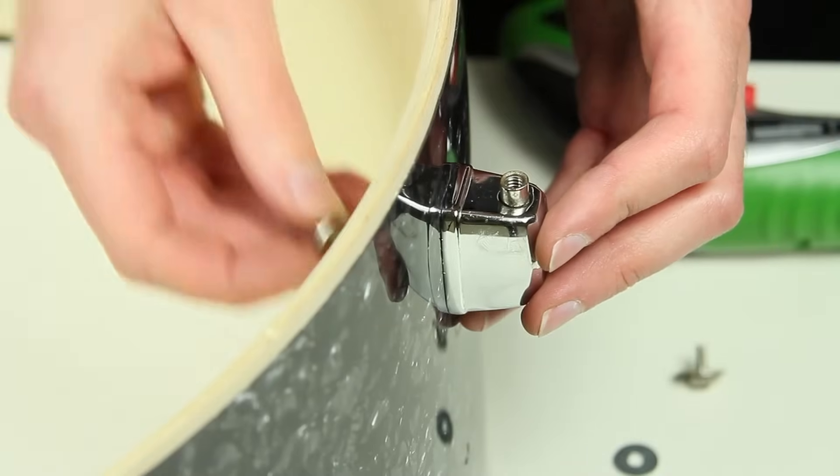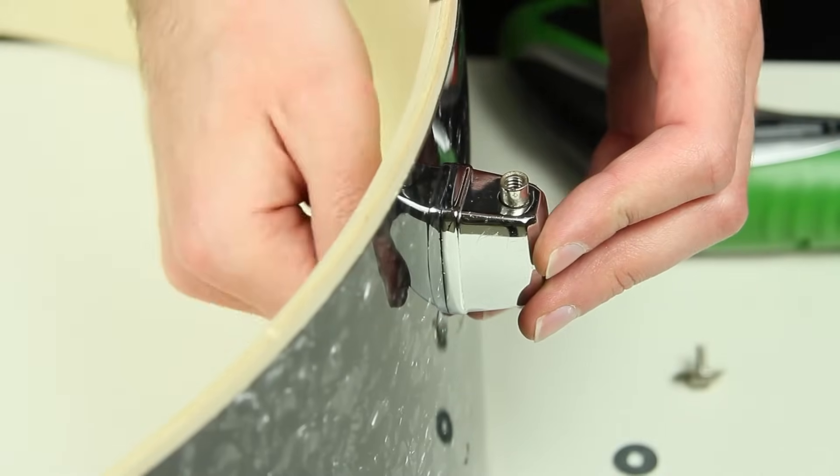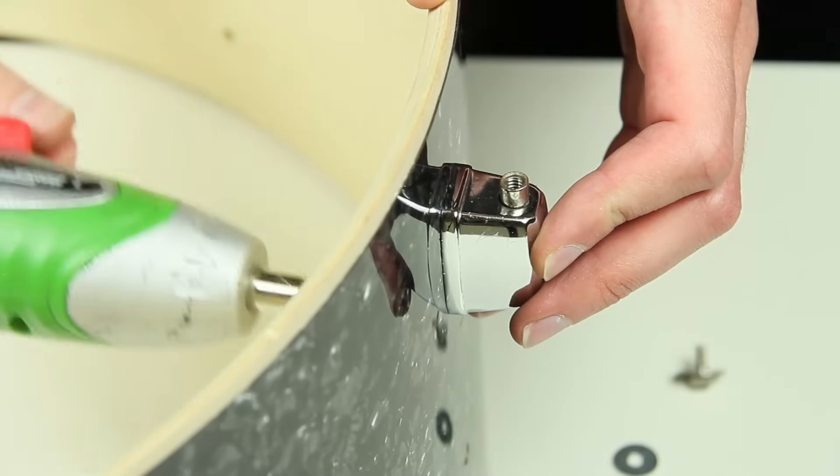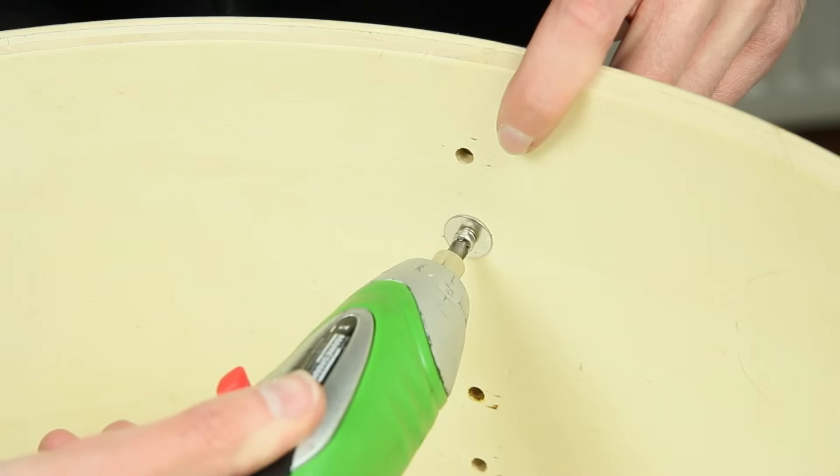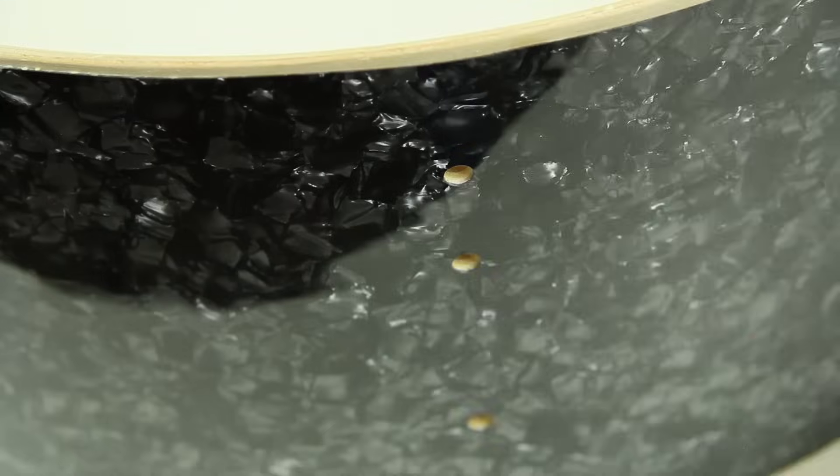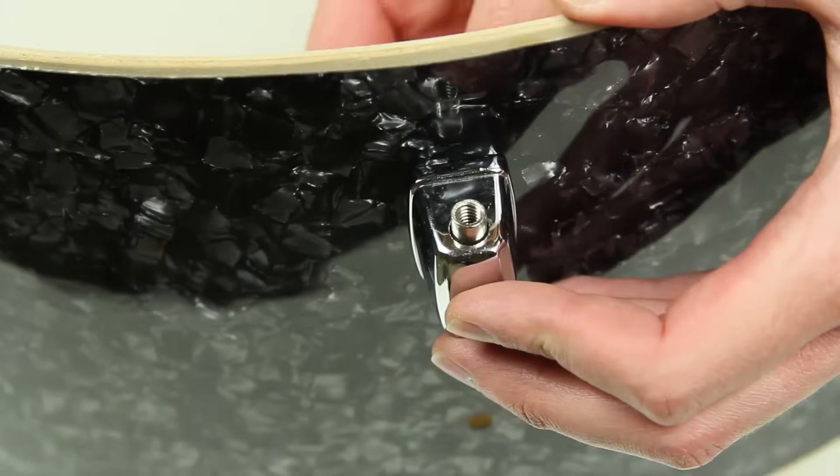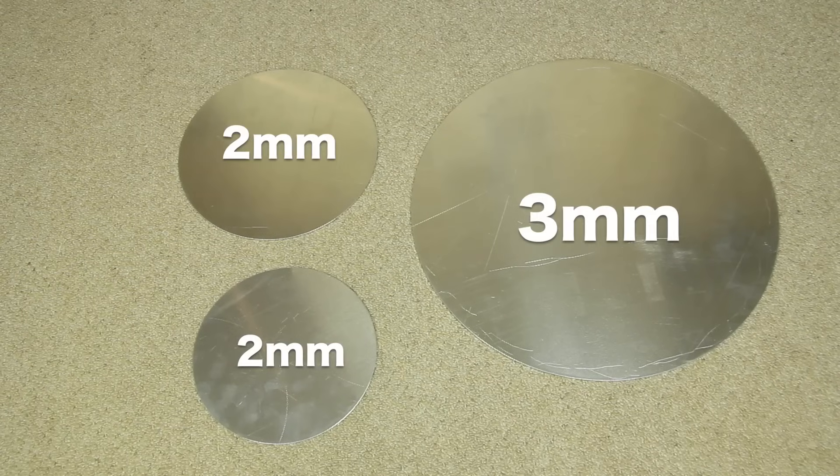This video is all about the bass drum. The lugs need to be applied first. The trigger system will be made in the same way as the TOM triggers in the previous video, except that the aluminum disc is 3 mm thick and not only 2.